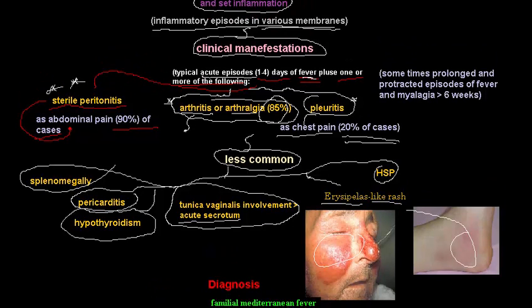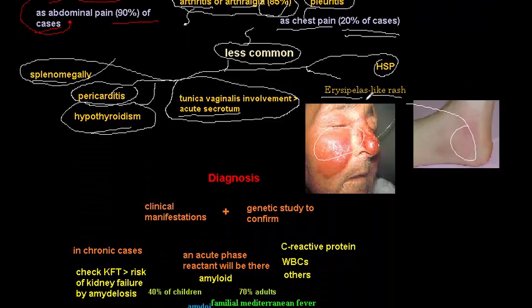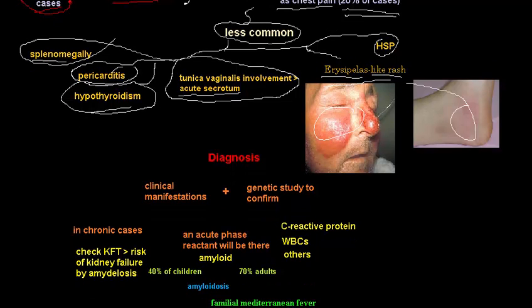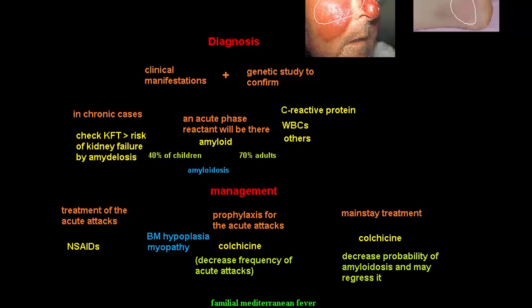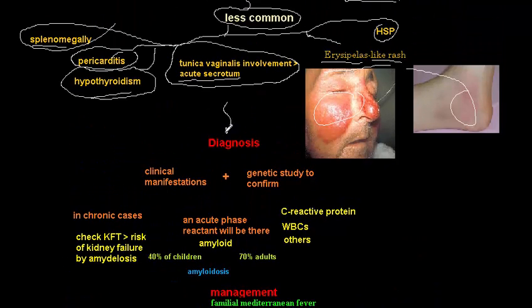To summarize the manifestations of FMF: we almost always have fever, and inflammation of membranes — the peritoneum causing abdominal pain, the pleura causing chest pain, the joints causing arthritis, the heart causing pericarditis. We may also have splenomegaly, hypothyroidism, scrotal pain and swelling, Henoch-Schönlein Purpura, and an erysipelas-like skin rash.